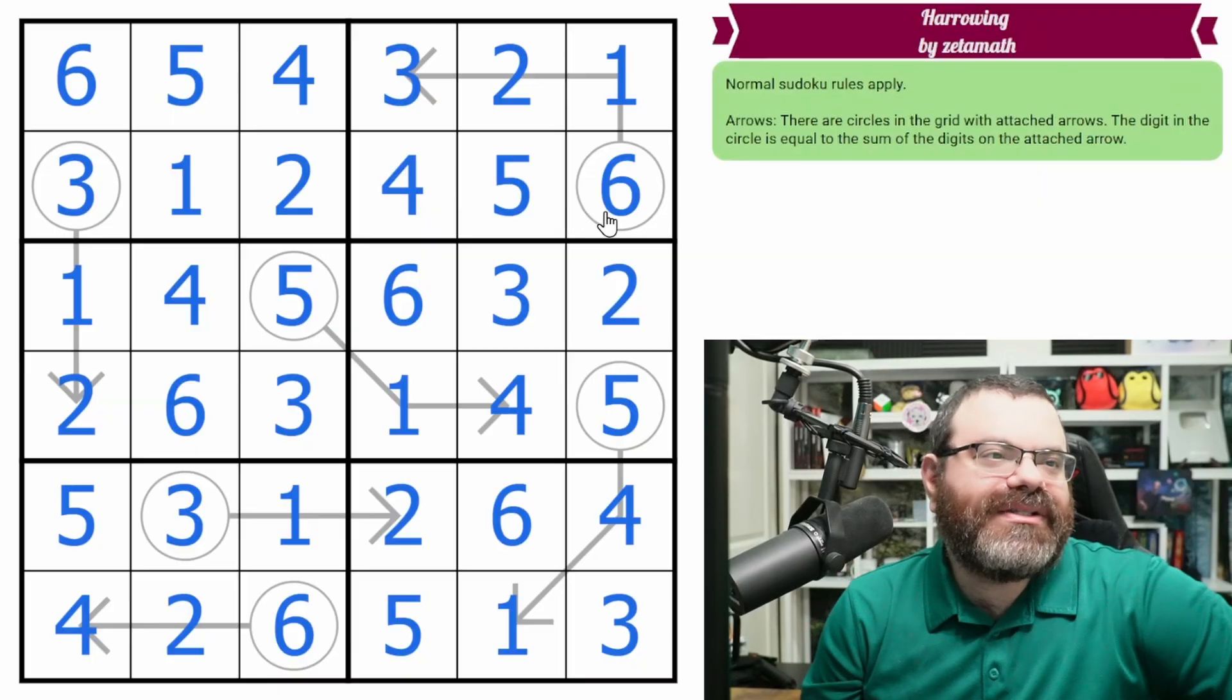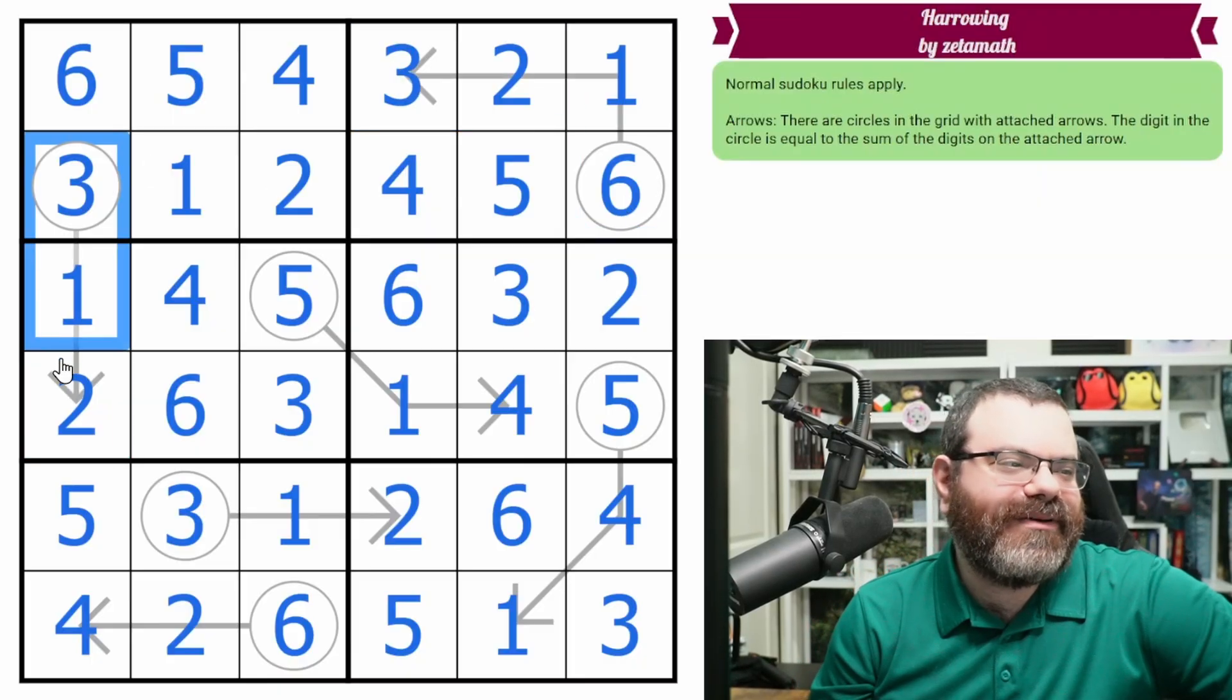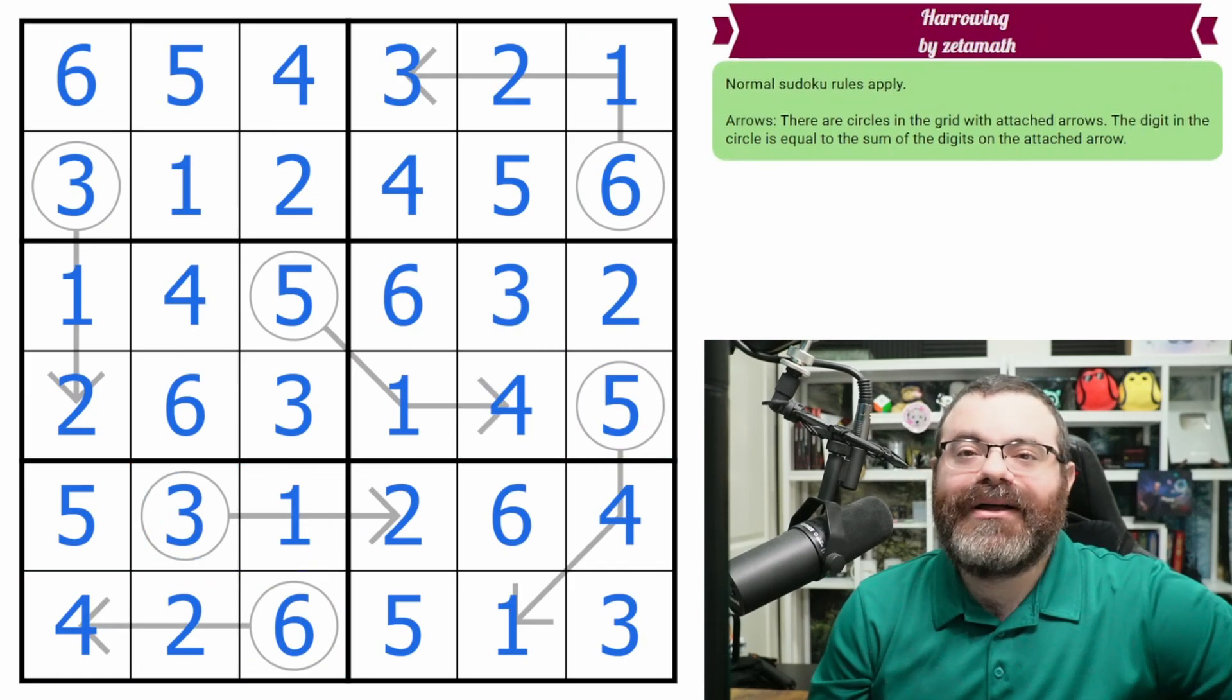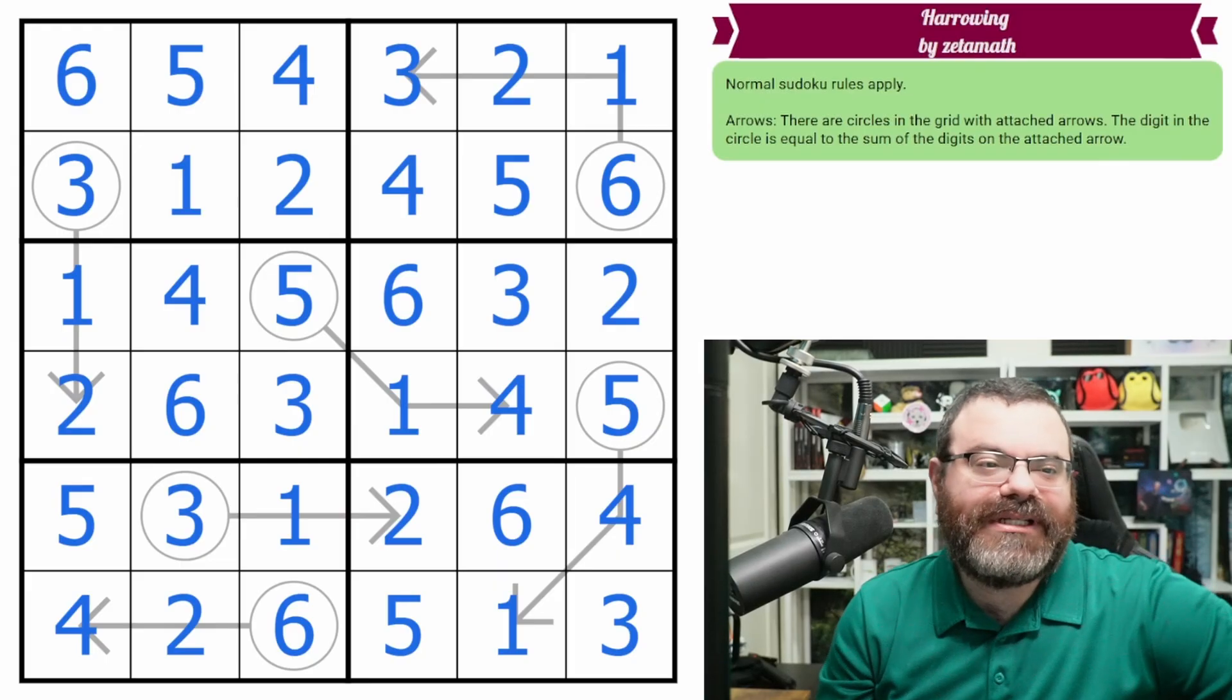All right. Nice arrow puzzle, Zeta. As usual, we got the Zeta flow. So we started here. And we just kind of worked our way around the grid and finished the puzzle nicely. All right. Cool. Well, very nice adventure puzzle. I enjoy that difficulty for adventure.